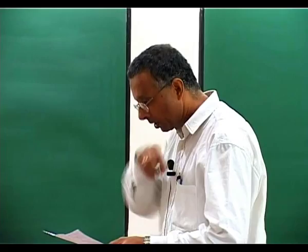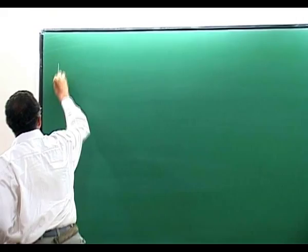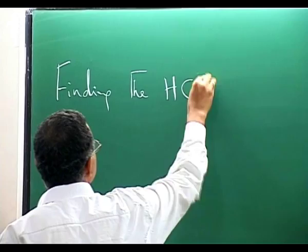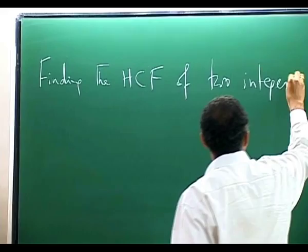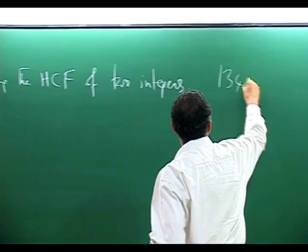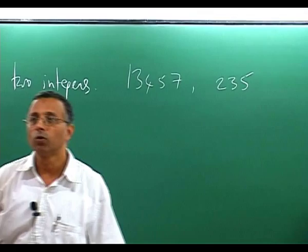Let us begin. I will be speaking about three or four items. The first one: I ask you the following — finding the HCF, the highest common factor, of two integers. This might seem very trivial to you, but suppose I give you some large numbers. How would you find their HCF? How would you go about doing that?